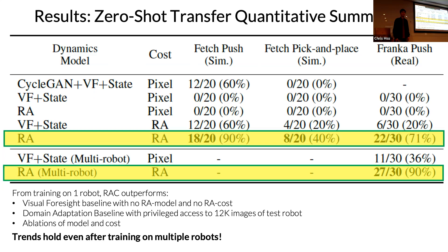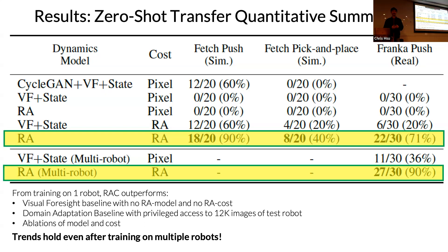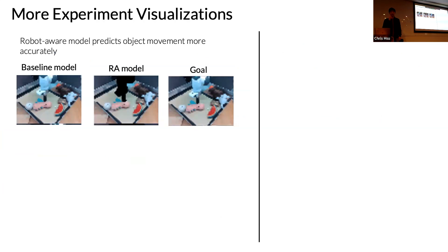Audience question: does the multi-robot training include the Franka? No — the Franka is only seen at test time. A few-shot experiment provides a limited amount of video data from the test robot, and RAC still outperforms. The key assumption is we know the forward and inverse kinematics of the robots we transfer to. The baseline video prediction outputs the training-time robot instead of the test robot's arm, and object movement is wrong. Our method produces better predictions — the object moves correctly, enabling successful pick-and-place on the new robot.